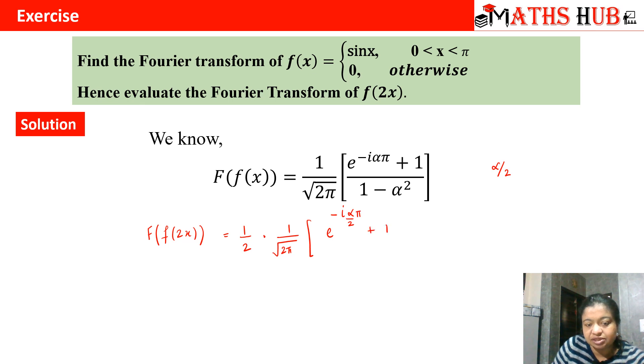The denominator will become 1 minus alpha square. Alpha square will become alpha square by 4. You can take the common denominator 4 out. You will get 4 upon 2 under root 2 pi, and here we will get 1 plus e to the power minus iota alpha pi by 2, divided by 4 minus alpha square.